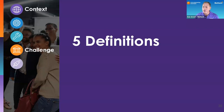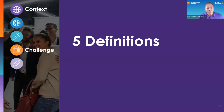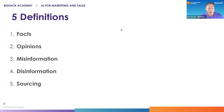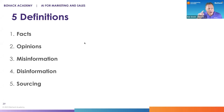The first term, of course, is hallucination. We talked about AI, generative AI making things up. But we wanted to get to some of the key definitions of fact checking: facts, opinions, misinformation, disinformation, and sourcing.